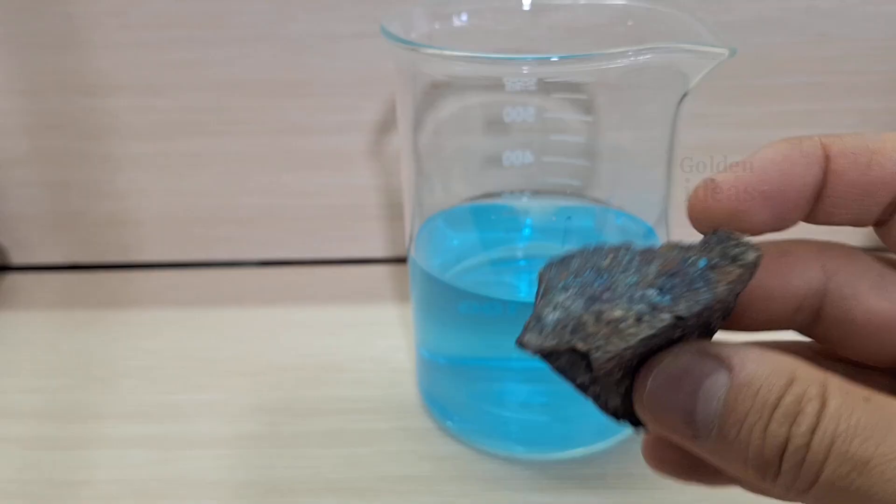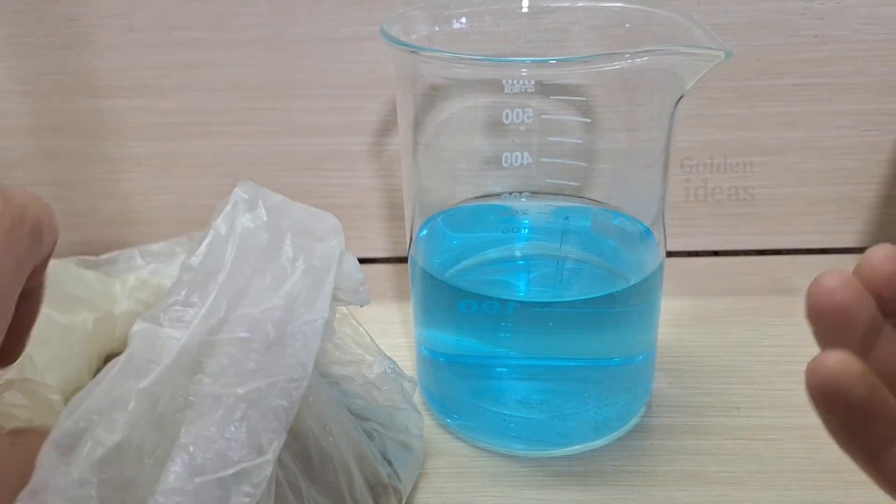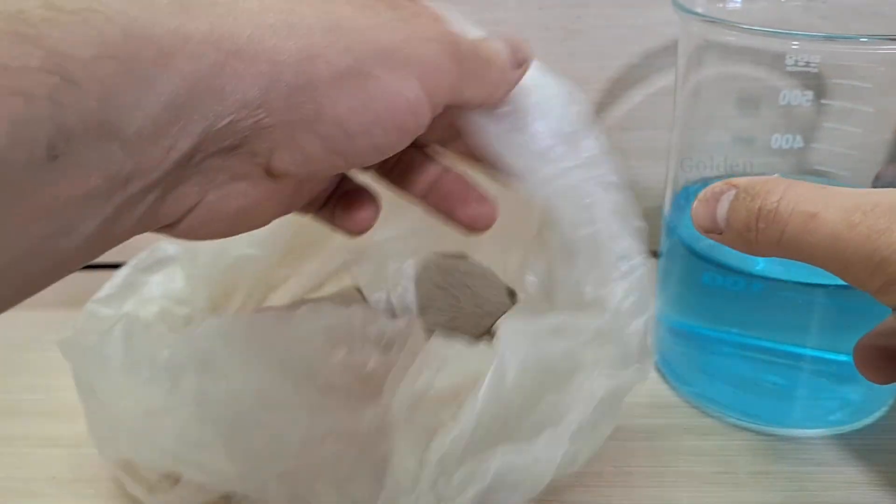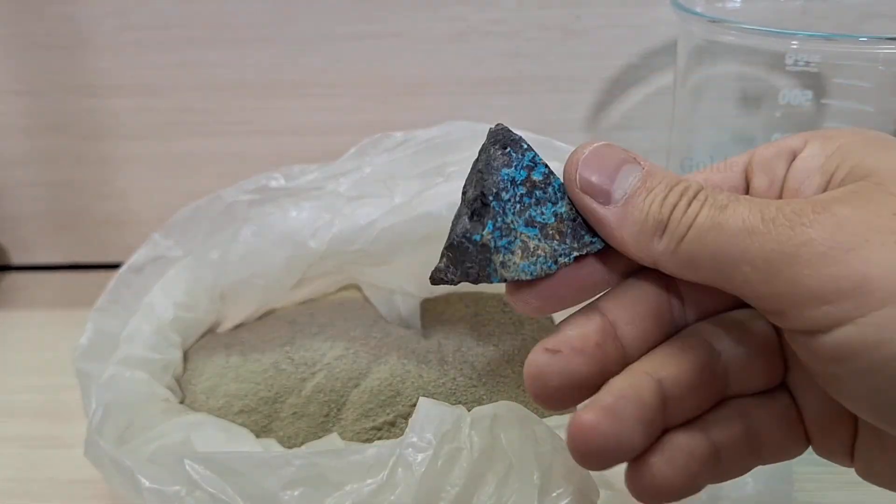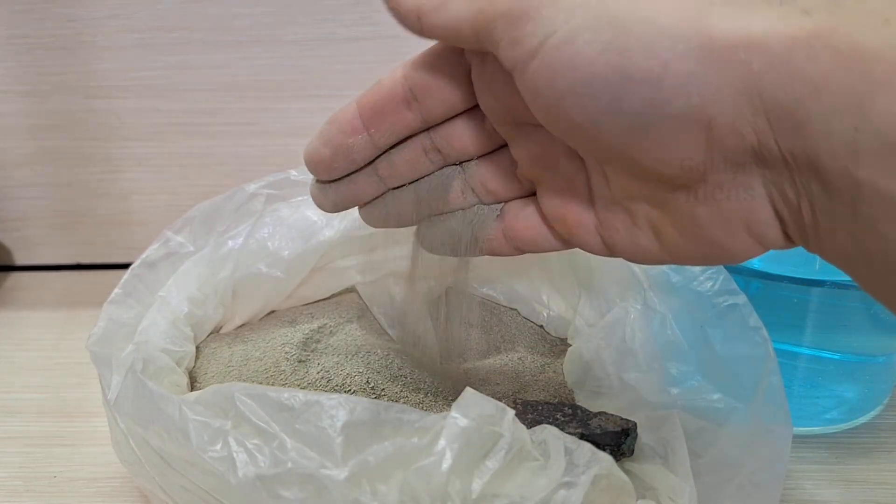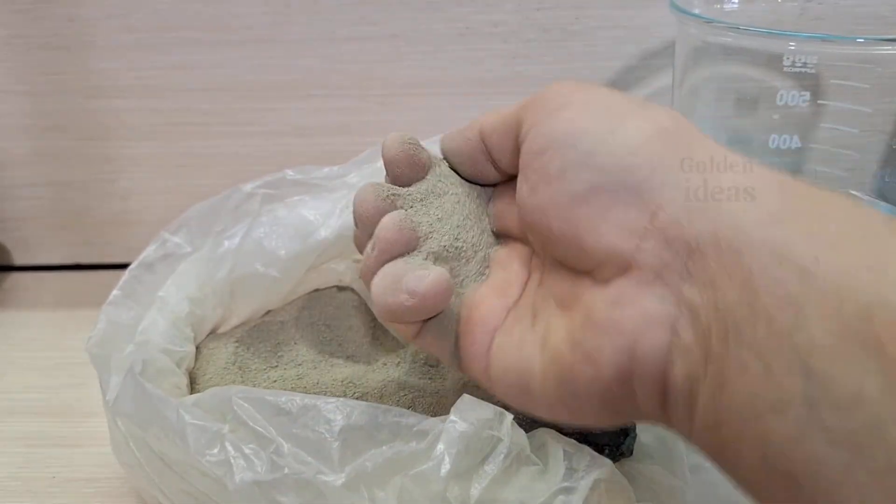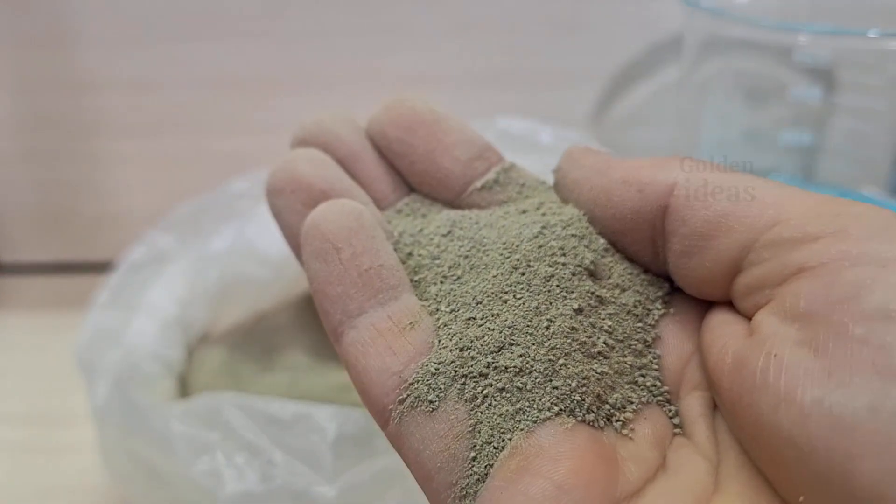This rock that you see in my hand contains small amounts of gold, silver, and copper. I'll show you an approximate percentage of each element on the screen. I've already ground a portion of this rock down to 200 mesh powder. The finer you grind the rock, the more surface area it provides for reactions with acid or cyanide.